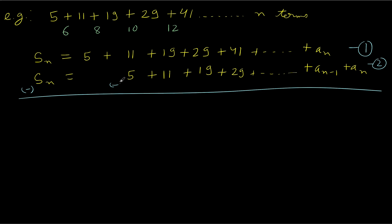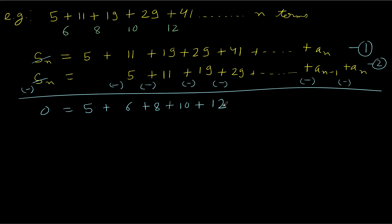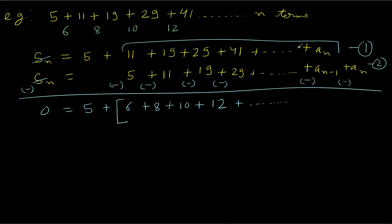When we subtract, the signs change to minus. The S_N terms cancel out to give 0. We get 5 as the first term, then 11 minus 5 gives 6, 19 minus 11 gives 8, 29 minus 19 gives 10, 41 minus 29 gives 12, and so on. The original series had N terms; since we shifted by one term we are not considering one term, so there will be N minus 1 terms in this part. At the end we have minus A_N.